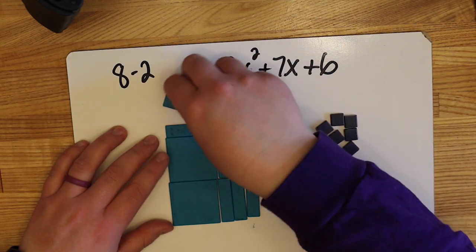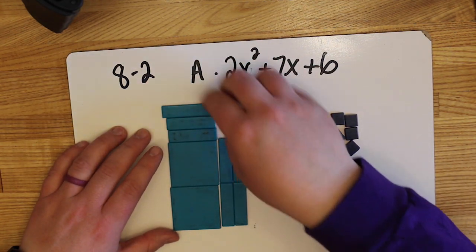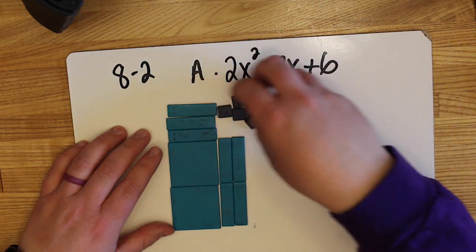If they don't fit perfectly, it's not factorable. In this case, when we rearrange them, you can see that this will make a rectangle.